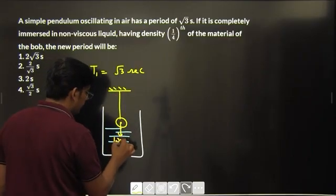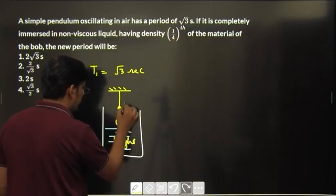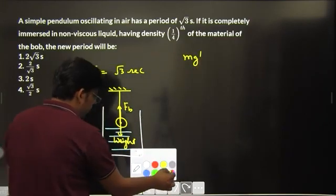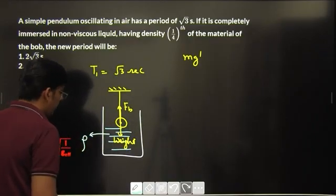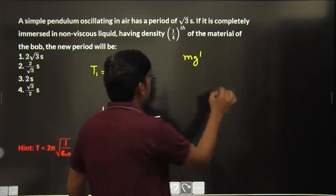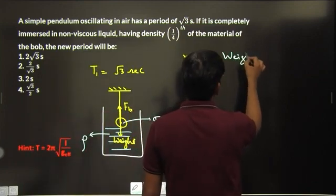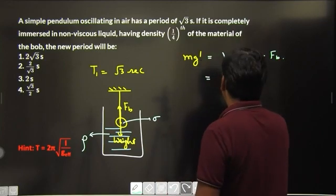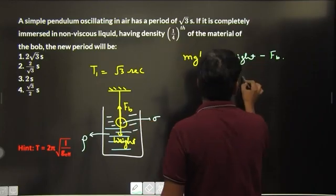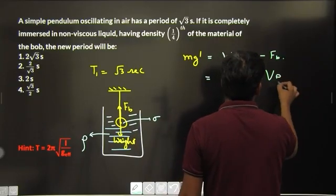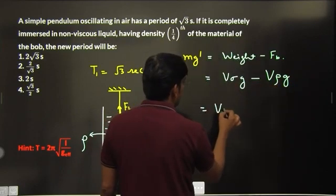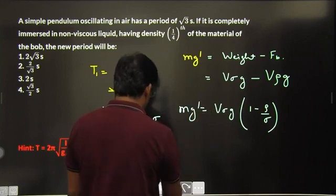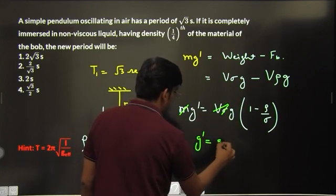The effective weight would be weight minus buoyant force. Let the density of the liquid be ρ and density of the bob be σ. Weight is volume of the bob multiplied by σ times g, and buoyant force is volume of the bob multiplied by ρ times g. Taking V·σ·g common, effective weight = V·σ·g·(1 − ρ/σ), so effective g = g·(1 − ρ/σ).